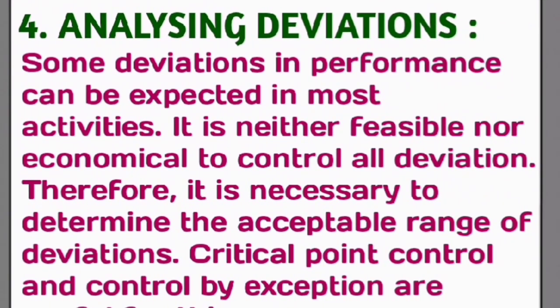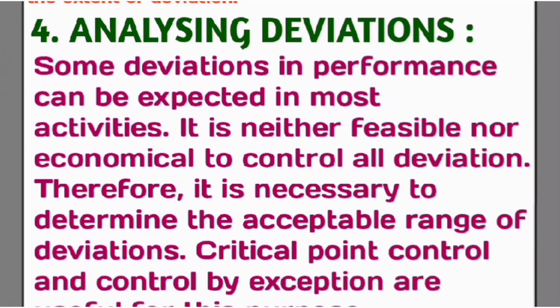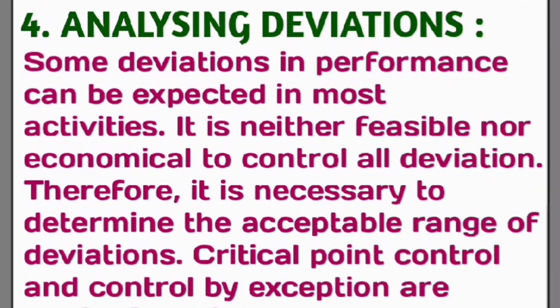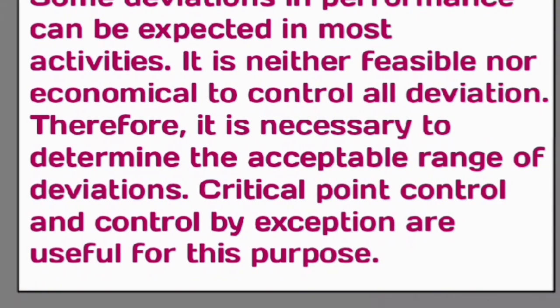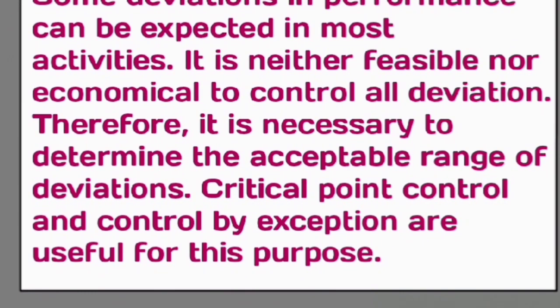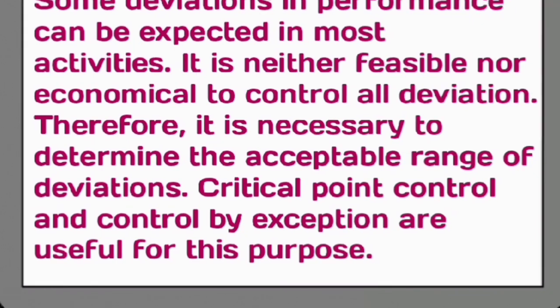Step 4: Analyzing Deviation. Some deviation in performance can be expected in most activities. It is neither feasible nor economical to control all deviations. Therefore, it is necessary to determine the acceptable range of deviations. Critical point control and control by exception are useful tools for this purpose.